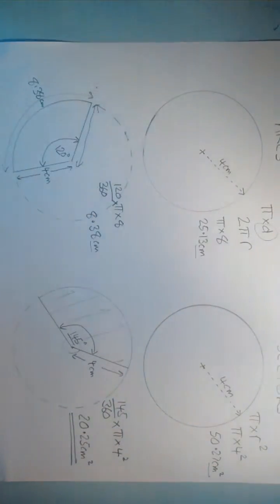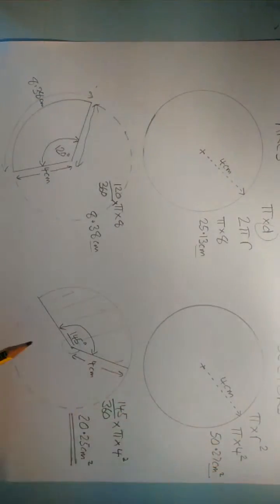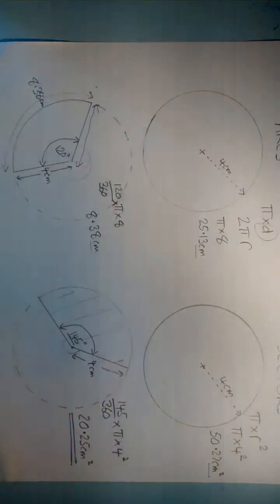So the basic principle is the same for each of these. Use the normal formulae for circumference and area of circle. But then apply the proportion according to the angle at the centre. So whatever angle at the centre, divide that by 360. And that will tell you the proportion of the whole that you've got.